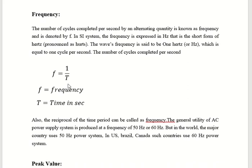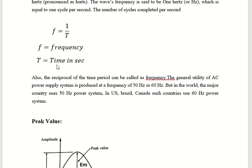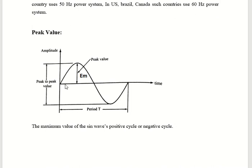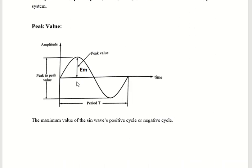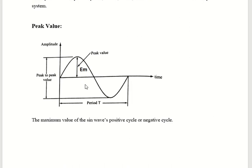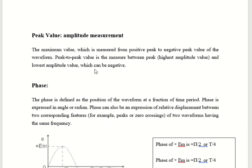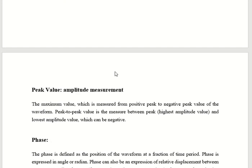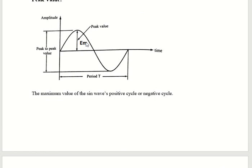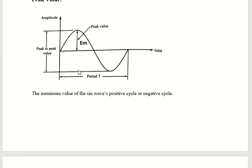Frequency is 1 divided by the time period — the inverse of the time period is the frequency. Peak value means, from the reference, what will be the maximum amplitude — that is the peak value of the sinusoidal wave, the maximum value of the sine wave's positive or negative cycle. EM is the peak value. Peak-to-peak value is measured from the positive peak to the negative peak, so 2 times EM is the peak-to-peak value.